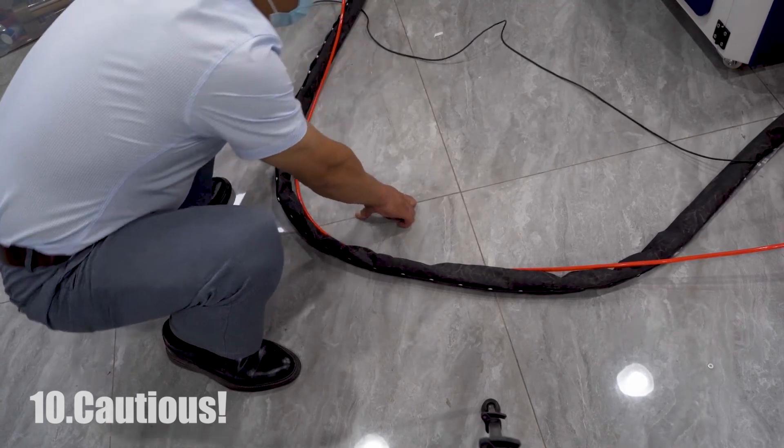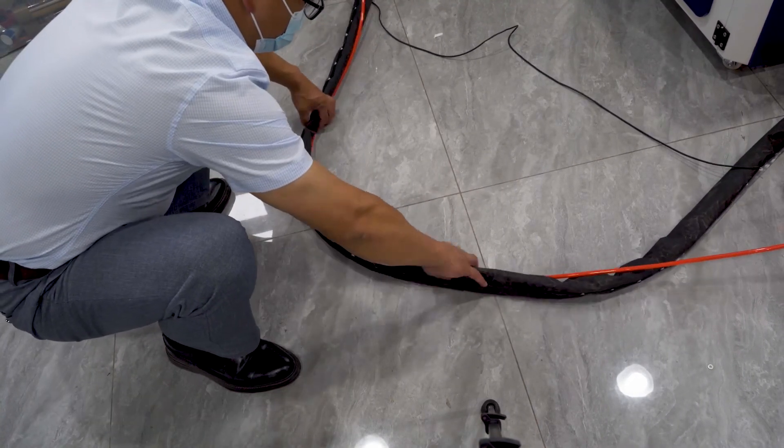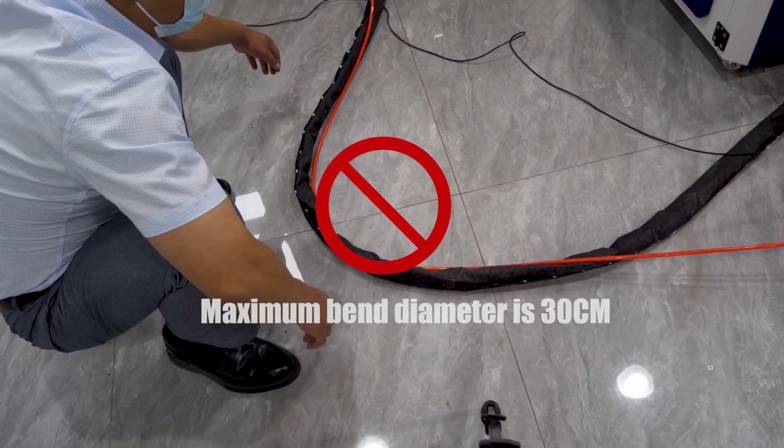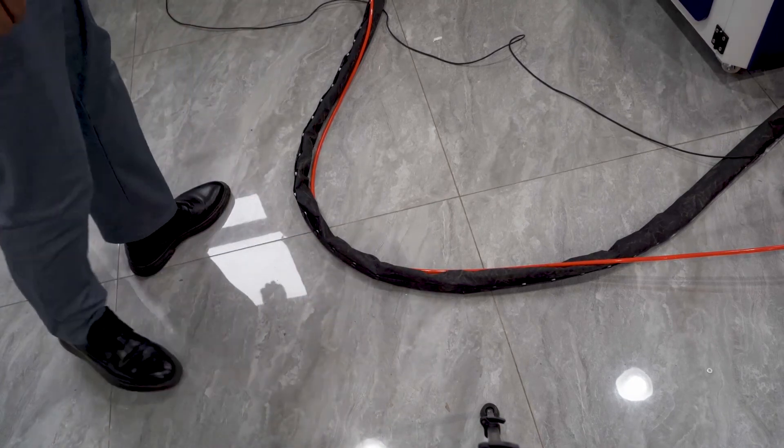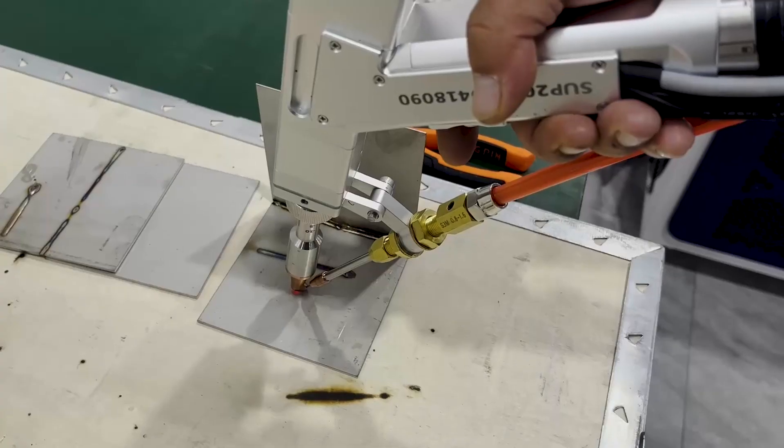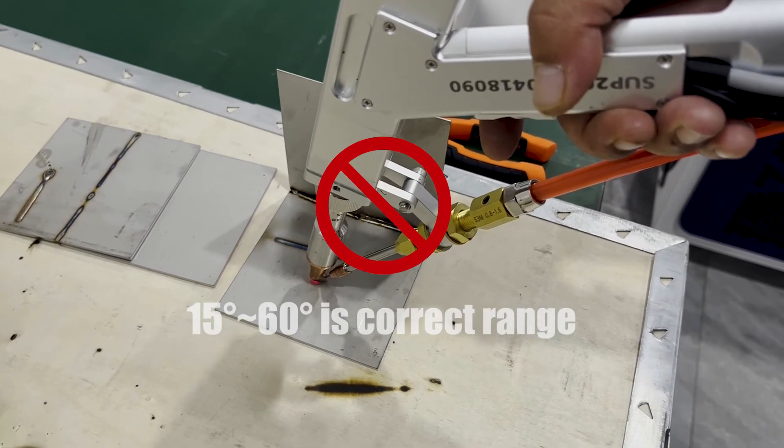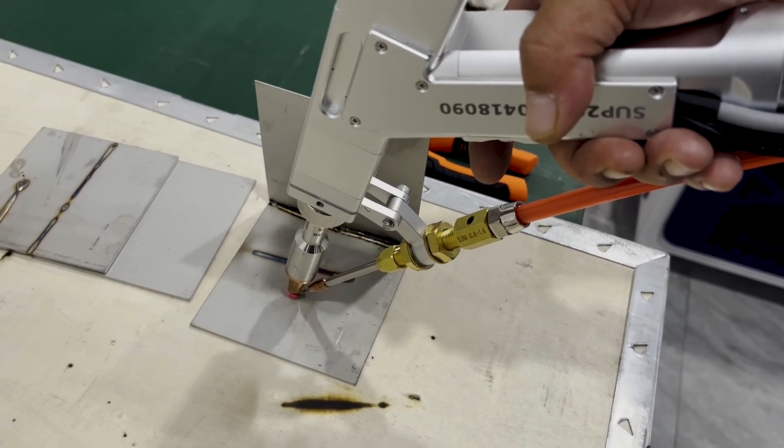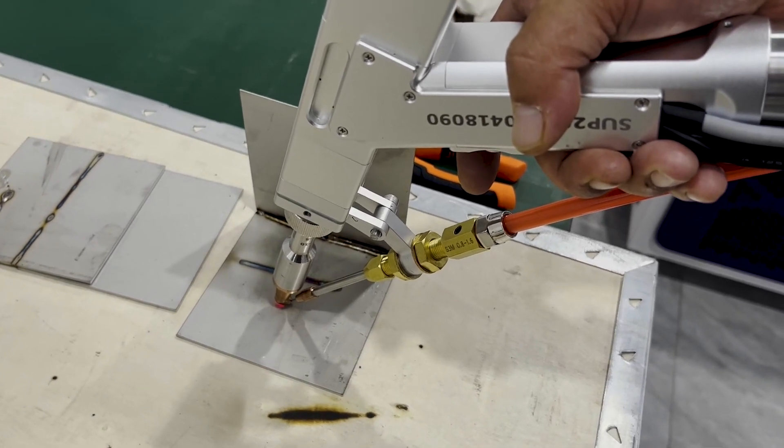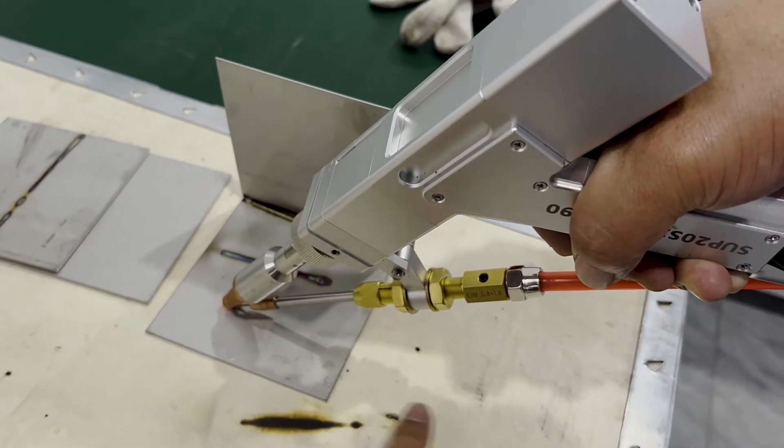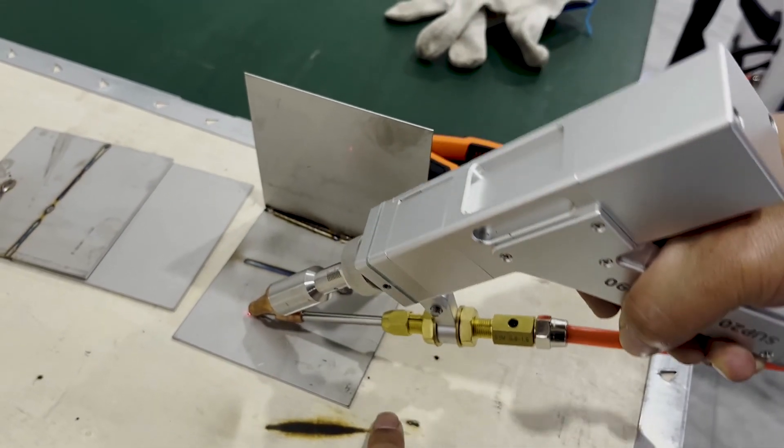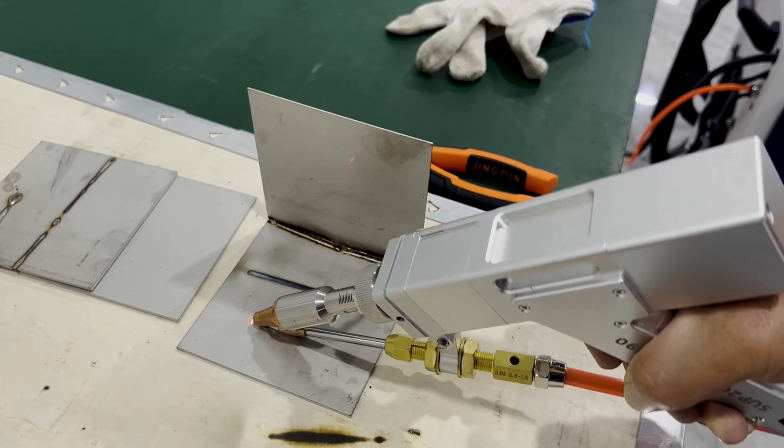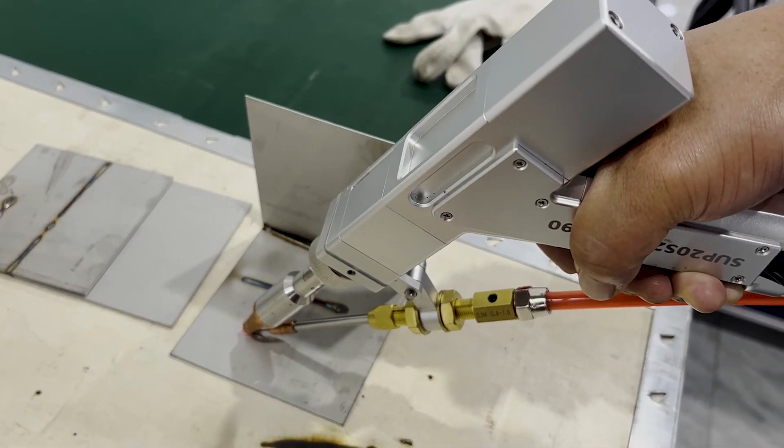Caution. Firstly, you cannot bend the fiber cable. The maximum coil diameter of the fiber cable is 30cm. You cannot bend it, it will break the machine. You cannot make the laser gun vertical to the metal board. It will break the fiber cable and the laser source. The angle from the laser gun to the metal board should be 15 degrees to 60 degrees.